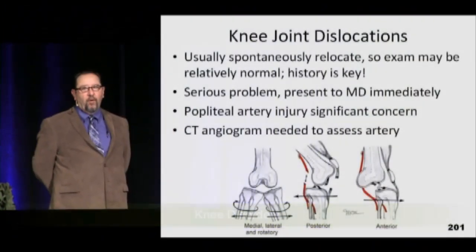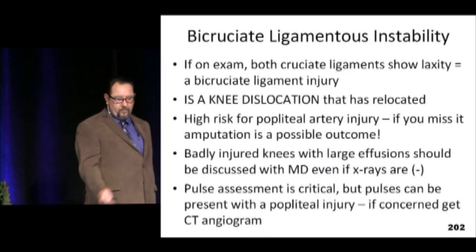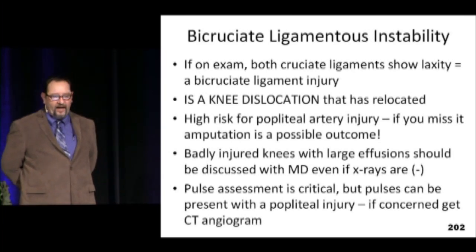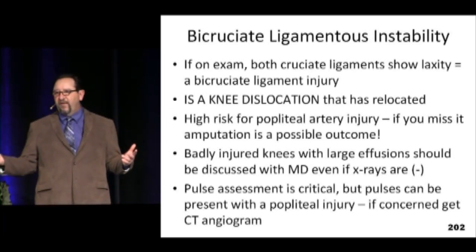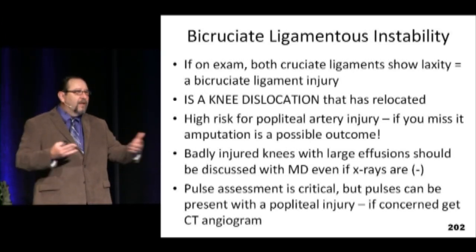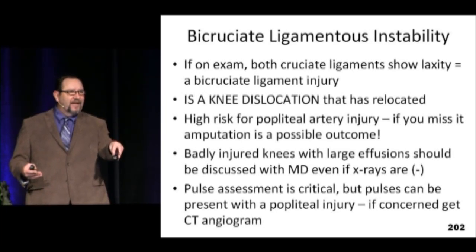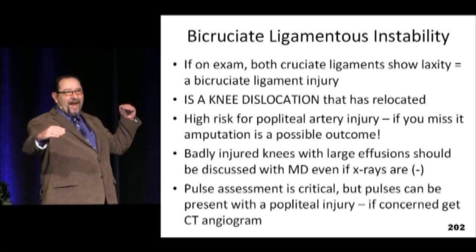Bicruciate ligamentous instability signals the need for a more serious workup. When you find arterial flaps, not all need surgery, but some do. The reason the popliteal artery is injured is because it's fairly pinned — it can't move around. It's anatomically pinned where it trifurcates around the fibular head and also above the knee where it exits the adductor canal. When the knee dislocates, it's really hard not to injure it, particularly with a posterior dislocation.